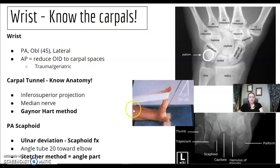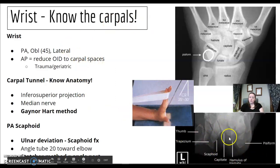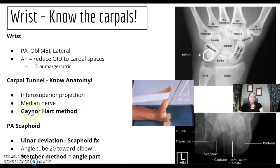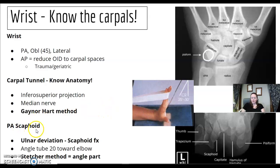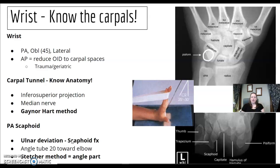Carpal tunnel — I want you to memorize this anatomy, hint hint, wink wink. Know this one both ways. You might see it referenced as the Gaynor-Hart method; that's the carpal tunnel view. The one that's reversed is the carpal bridge, so if it's going the other way, it's the bridge. For the PA scaphoid, you're going to use ulnar deviation. We're looking for the scaphoid bone — it's the one most often fractured. You're going to angle the tube 20 degrees toward the elbow. Remember the Stecher method angles the part instead of angling the tube.